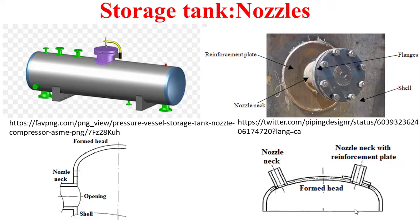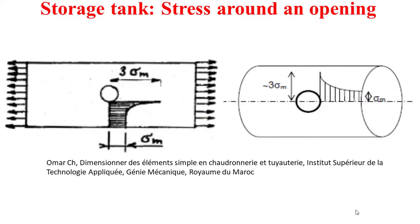It is important to note that stress is naturally amplified around an opening. When we have a stress Sigma far away from the opening on the shell or on the formed head, this stress will be amplified to three times Sigma in the neighborhood of the opening. For that reason, we should carry out an amplification of the thickness around the opening using a reinforcement plate, which will be covered in depth in the next video.